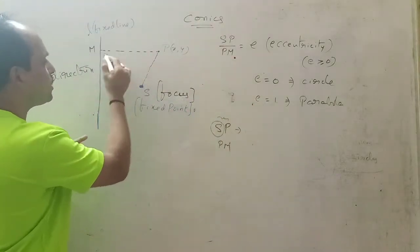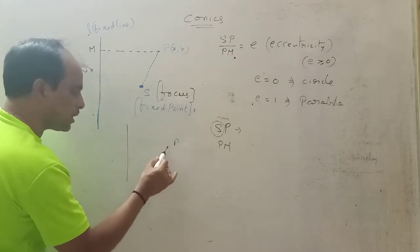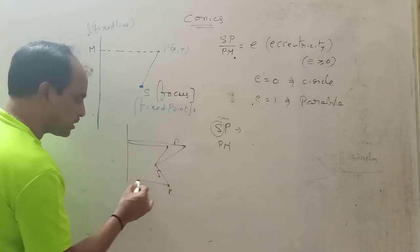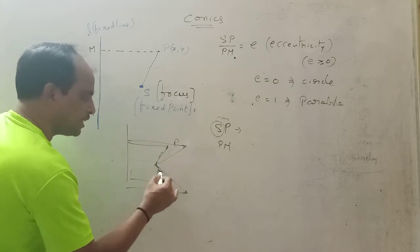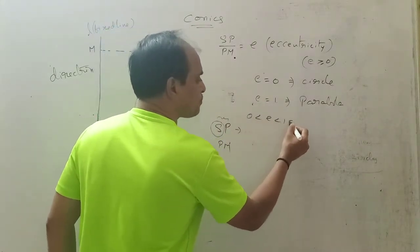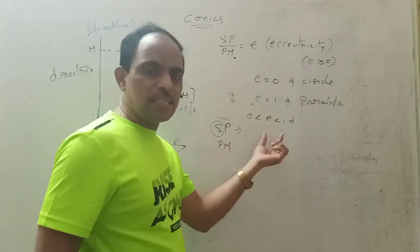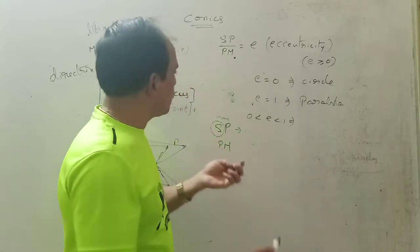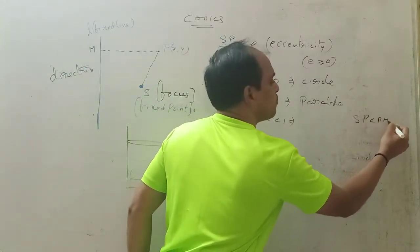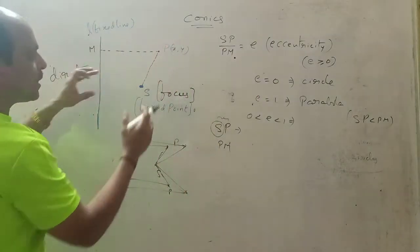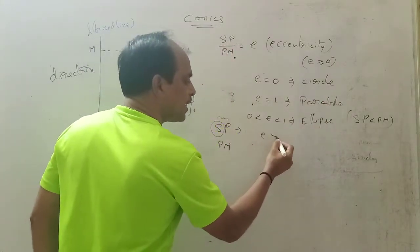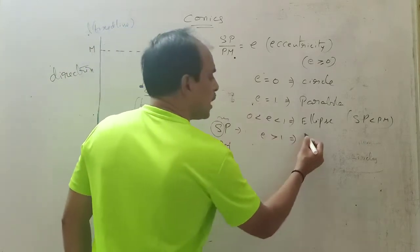When e = 1, as the variable point P moves such that SP equals PM, the path traced is a parabola. If the eccentricity value is between 0 and 1 — meaning SP is less than PM (the perpendicular distance is greater than the point-to-focus distance) — the conic is an ellipse.